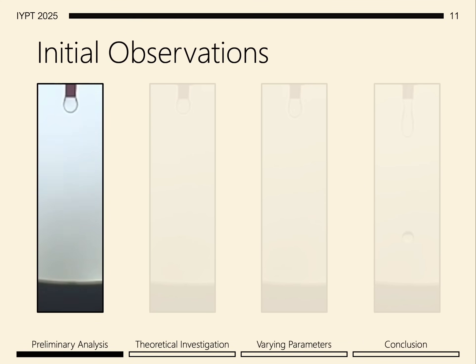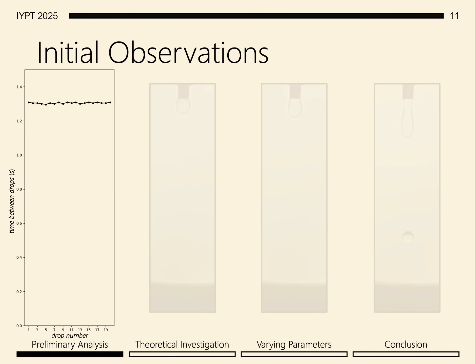Let's look at how the time between drops varies as we increase the flow rate. In the beginning, the flow rate is low, with drops coming out at a uniform rate. We can plot a graph of the time per drop against the drop number, where we see a constant time between drops hovering around 1.3 seconds.